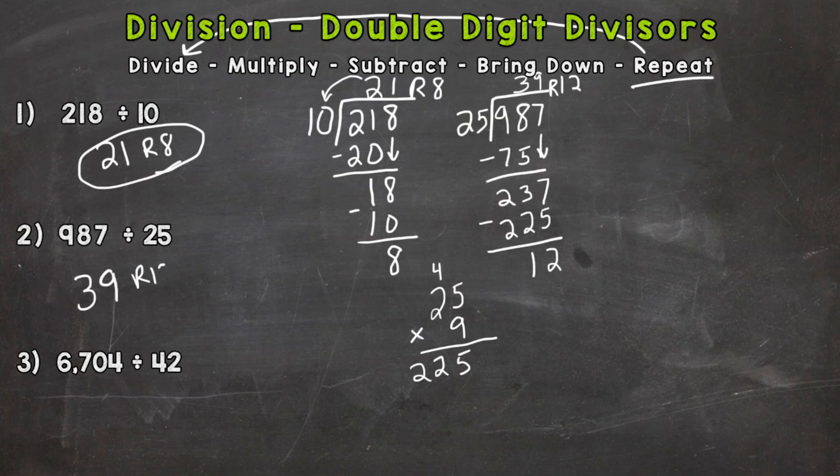So let's go to number three. We have a four-digit dividend, 6704, and we are dividing by 42. So we need to start with 6 divided by 42, which we can't do. So we need to do 67 divided by 42. Well, 42 times 1 is 42, 42 times 2 is 84, so that's too many groups of 42. So we can only pull out one group.